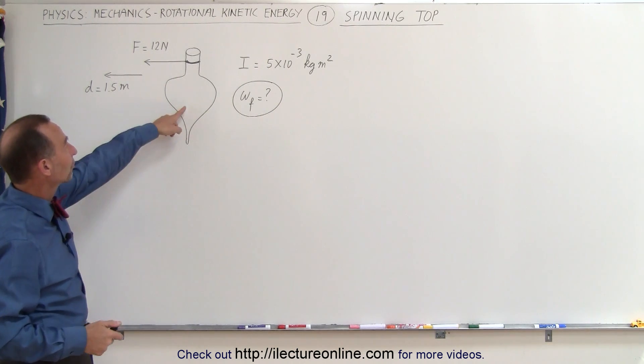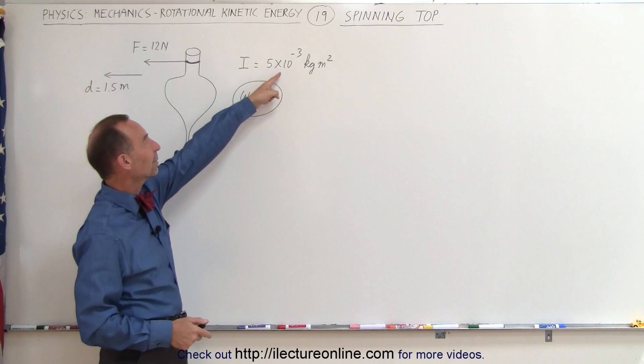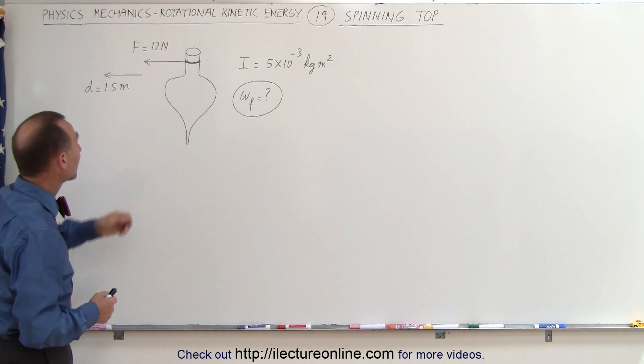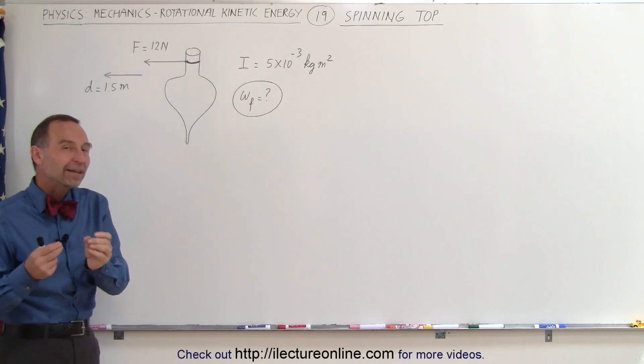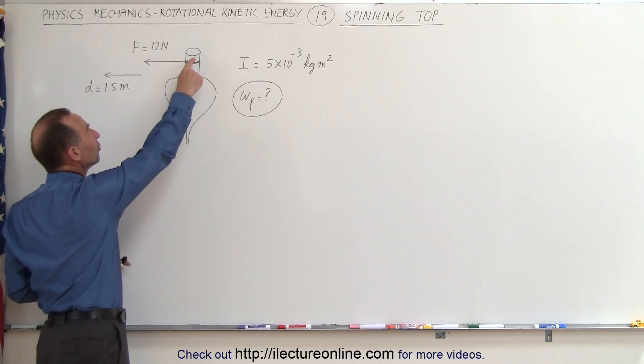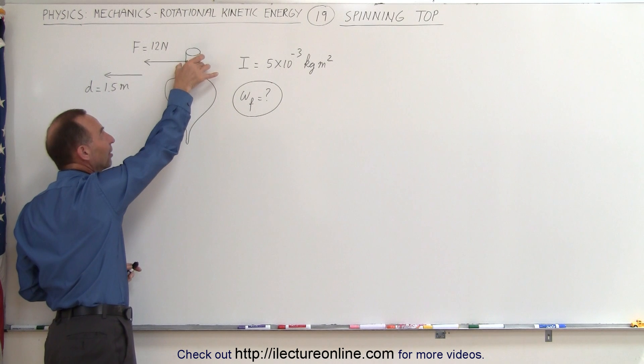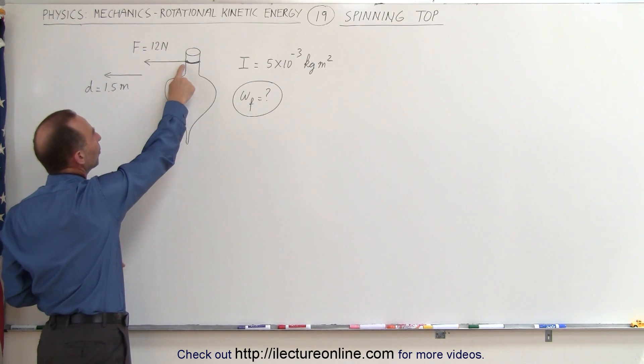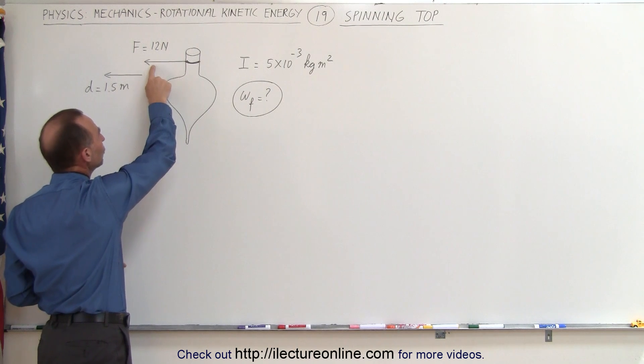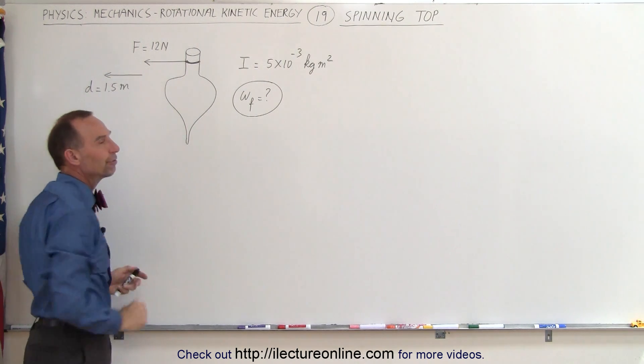So let's say that the moment of inertia of the spinning top is 5 times 10 to the minus 3 kilograms times meters squared. We pull on the string with a force of 12 newtons, and what's amazing is we don't need to know the radius of this end of the spinning top because what we're going to do is pull with a force of 12 newtons for a distance of 1.5 meters.